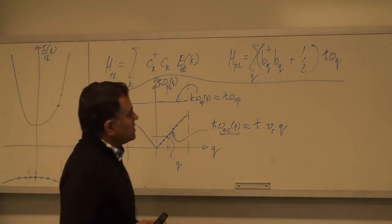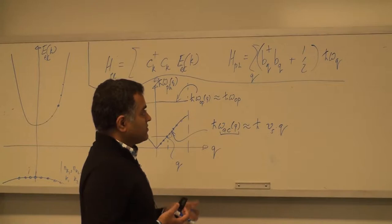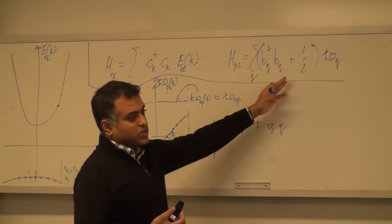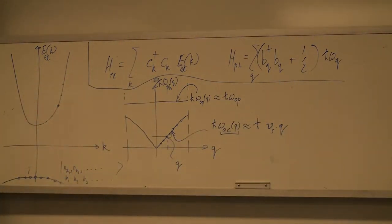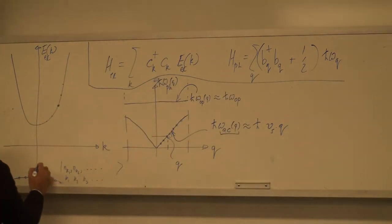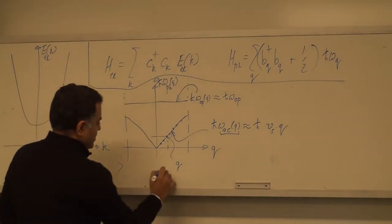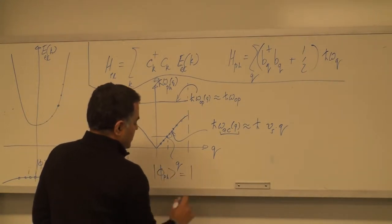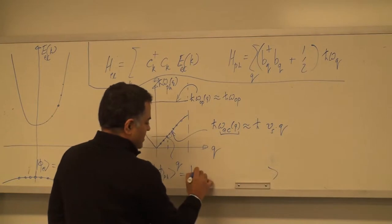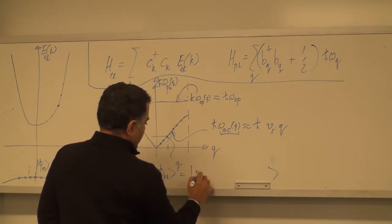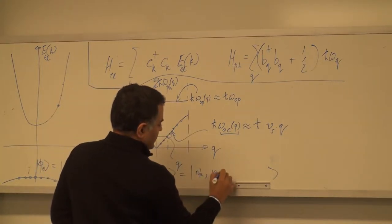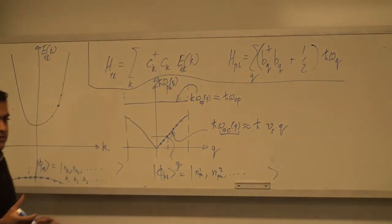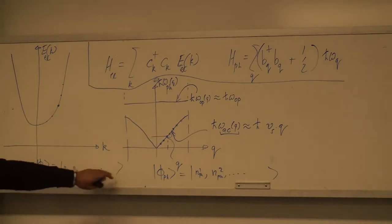Just like the zero-point energy of a harmonic oscillator, the half term usually doesn't matter when we're dealing with large numbers of phonons — analogous to sunlight with billions of photons in any mode. But if you're looking at single-phonon phenomena, it does matter. We can also write an occupation number state for phonons, labeling phonon occupation numbers in each mode.